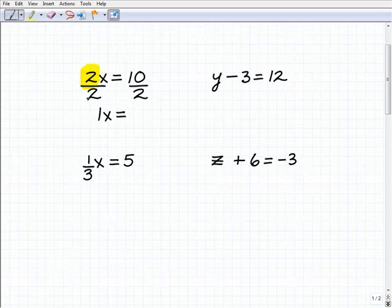Now if I divide the left hand side of an equation by a number, I just have to be fair and do the same thing on the right hand side. So here I have 10 divided by 2, and that is 5, so I have 1x equals 5, more commonly we just write it as x equals 5, and this is our solution.